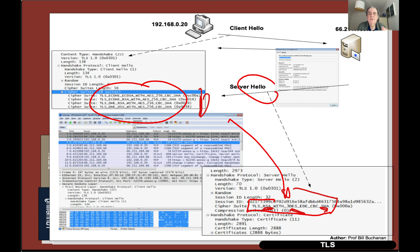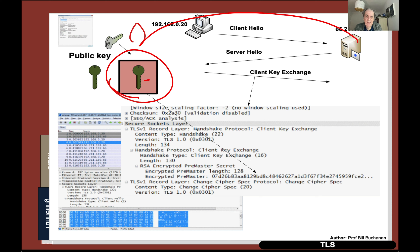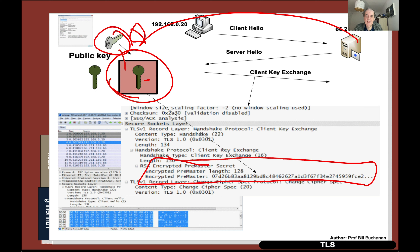Along with the Server Hello, the server sends its digital certificate. The digital certificate contains its public key. Sometimes we have a key exchange method which is Elliptic Curve Diffie-Hellman, or it could be that we use a public key encryption method. In this case, we use the public key of the server to encrypt the symmetric key that the client wants to use, and then send it over.